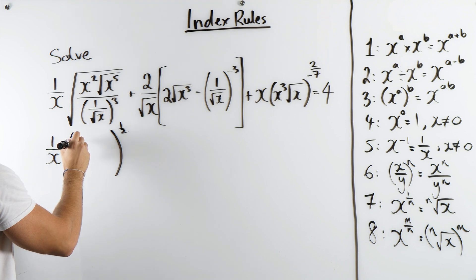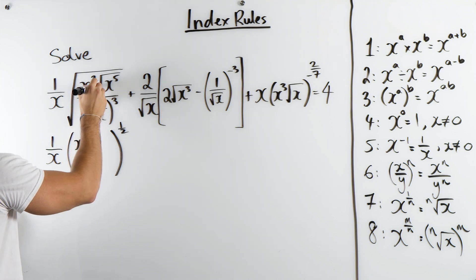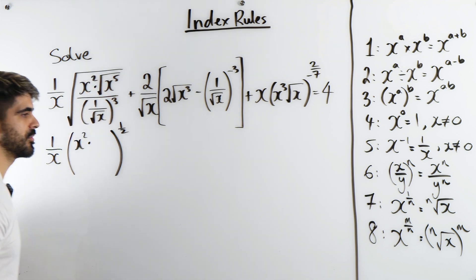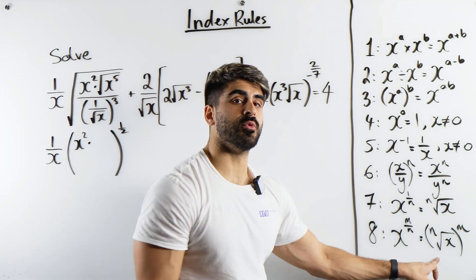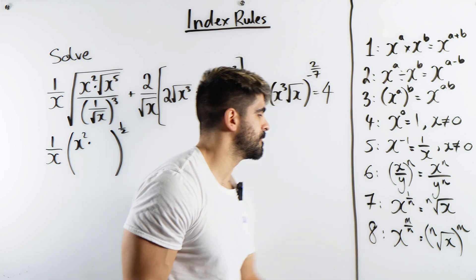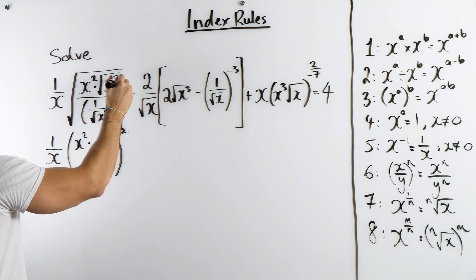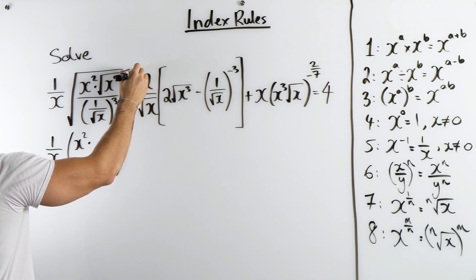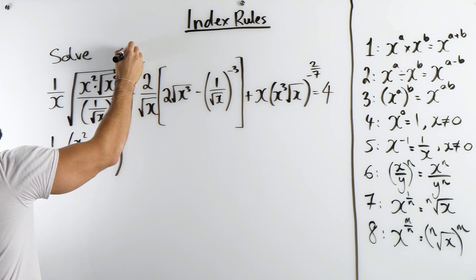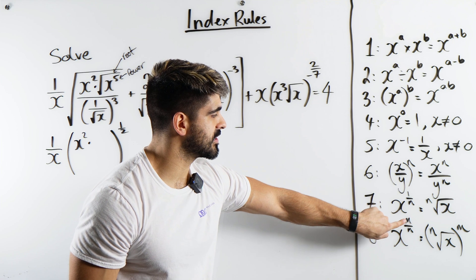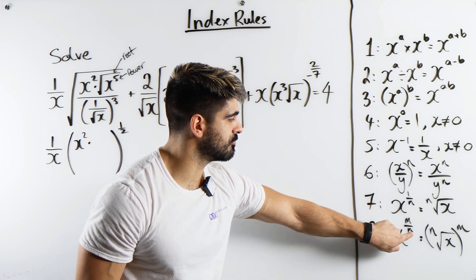Now within this we have x squared. Now remember that's a multiplication. Multiplied by x to the power of 5 root. Now this is like our rule 8 from the previous video. X to the power of 5, that's the power section. So this is the power section and this is the root section. So if you remember from the last video we said that the numerator is the power and this is the root.